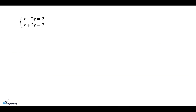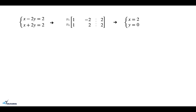Now let's see an example. We have a system of two linear equations: the first equation is x minus 2y equals 2, and the second equation is x plus 2y equals 2. The first step is to obtain the matrix format, which is shown here, and if you solve this system of equations you will get x equals 2 and y equals 0.